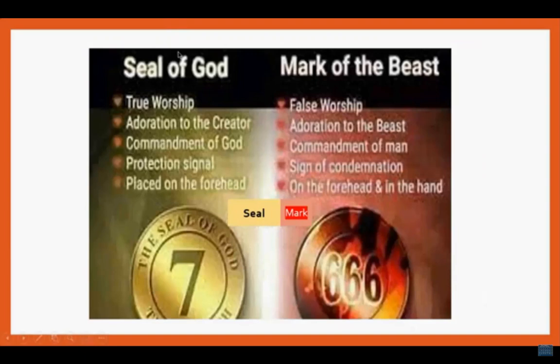We identify two seals: one is the seal on the children of God; the second is the mark of the beast. The seal of God represents true worship — adoration of the Creator, keeping the commands of God, and is a protection signal placed on the forehead. The mark of the beast, however, is false worship — adoration of the beast, following the commandments of men, a sign of condemnation found on the forehead and on the hand, associated with the number 666.